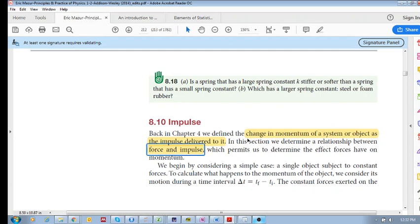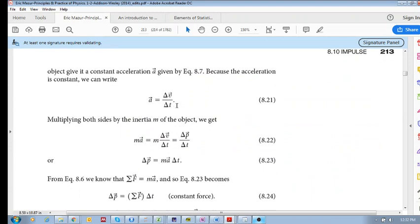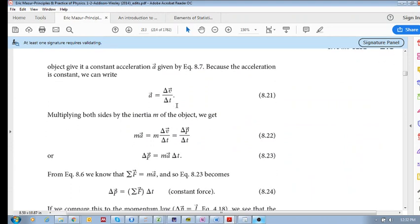So we've seen that impulse is related to the change in momentum, and we've seen that change in momentum is related to force. So now let us have a look at what is shown over here. We know that acceleration is delta V delta T. Mass times acceleration is mass times delta V delta T. And this M delta V over here is actually your change in momentum.